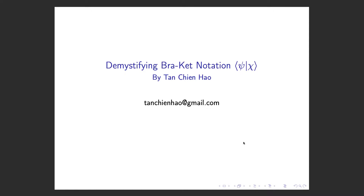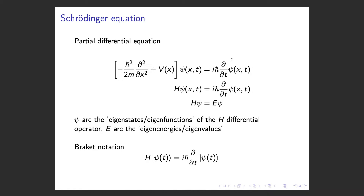Hello, and today I'll be demystifying the bracket notation used in quantum mechanics. Perhaps you are a third year undergrad student who has just taken a course in quantum mechanics. You recognize the time dependent and time independent Schrödinger equation, and you have heard that psi is the eigenstates or eigenfunctions of the Hamiltonian operator, which is the differential operator, and E is the eigenenergies or eigenvalues of this operator.